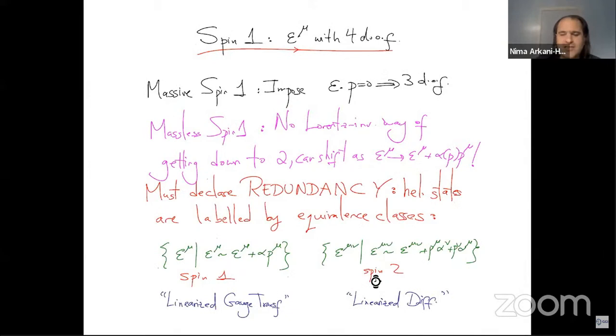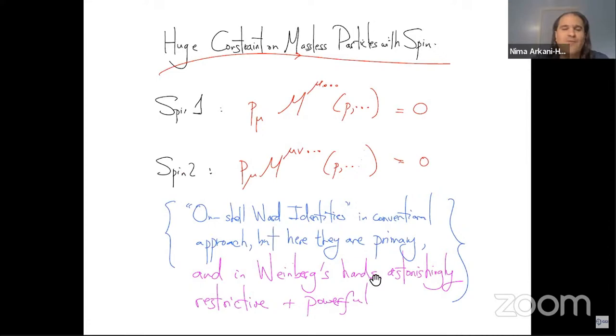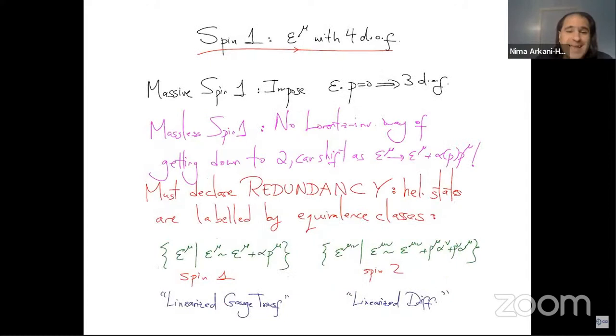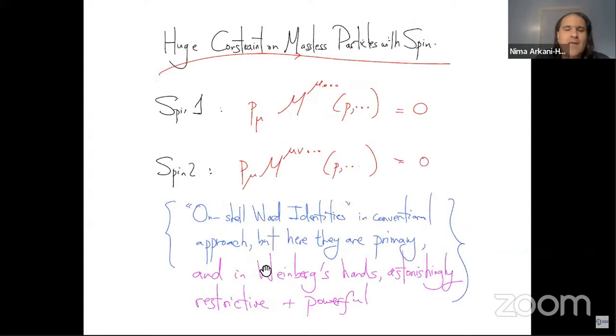Now, this redundancy means that there is a huge constraint on whatever the Feynman amplitudes are for massless particles with spin. If we're supposed to get the same answer, no matter which representative in this equivalence class we choose, then the amplitude better be invariant if I shift the polarization vector proportional to their momentum. And so for massless spin one, we have to have this constraint that PMU dotted into MU with any other indices is equal to zero for spin two similarly again PMU dotted into MU new with any other indices should equal zero.